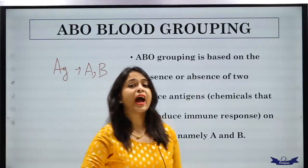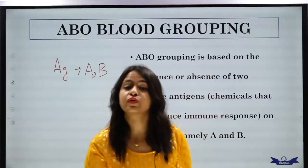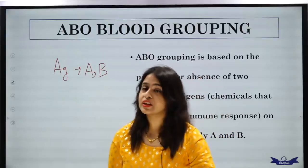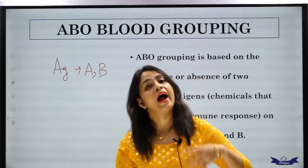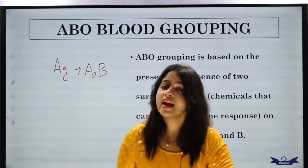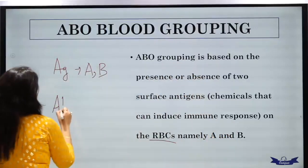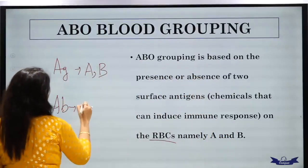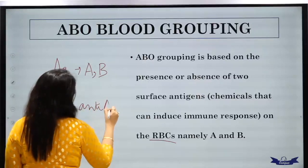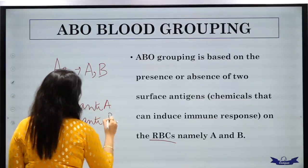Now let's talk about antibodies. Antibodies are present in the plasma. Since antigens are of two types, antibodies will also be of two types: anti-A and anti-B. So antibodies are of two types: anti-A and anti-B.